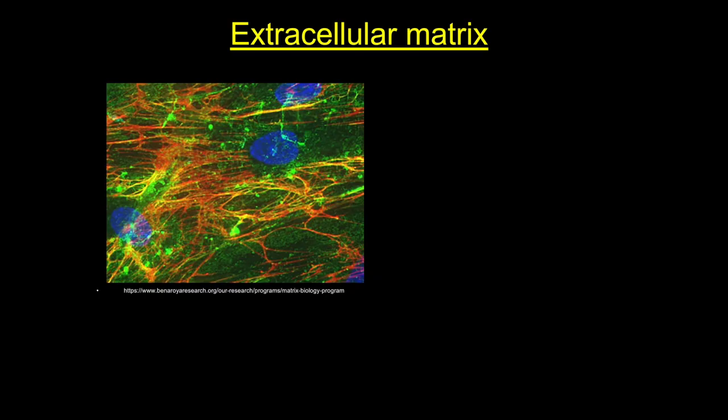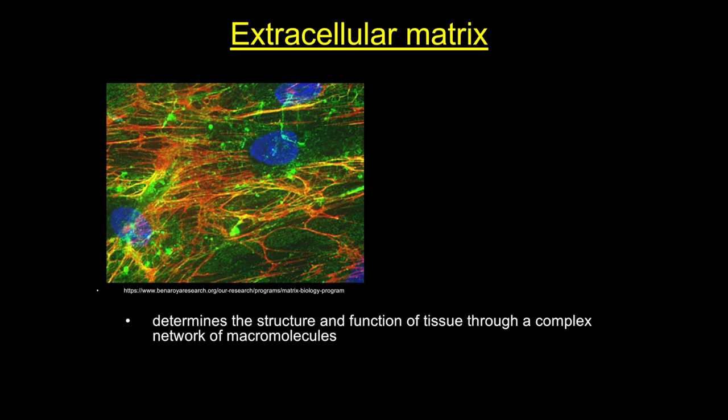Unlike other tissue types that are mostly cells, the major component of connective tissue is the extracellular matrix, or ECM. The ECM is a complex of non-living macromolecules manufactured by cells and exported into the extracellular space. The ECM has many functions, many of which we're only beginning to understand, including modification of development, morphology, and survival of cells. The ECM also influences cell migration, mitotic activity, and forms junctional associations with cells.